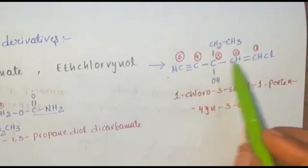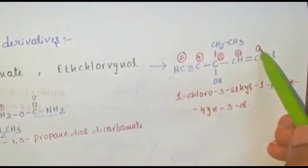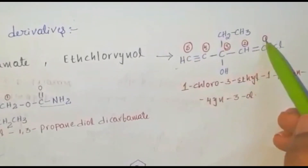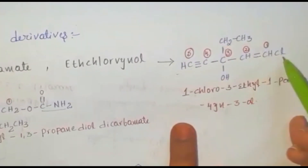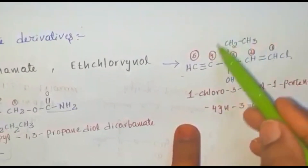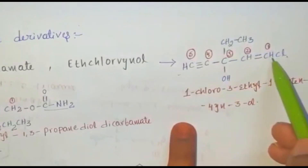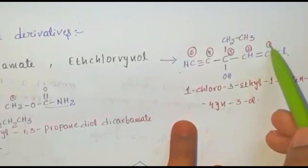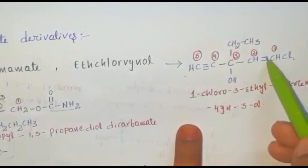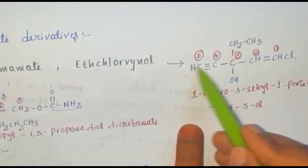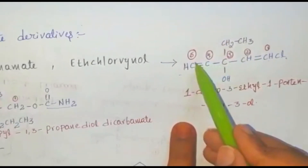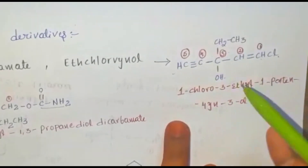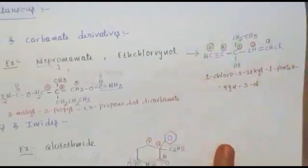The numbering is 1 through 5. The nomenclature is: 1-chloro, 3-ethyl, 1-penten-4-yn-3-ol — with a double bond between positions 1 and 2 — that is called ethchlorvynol.